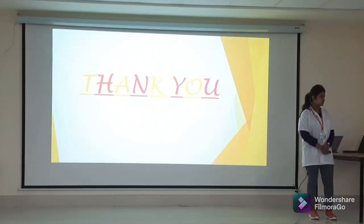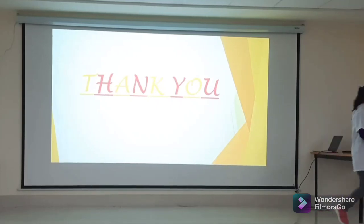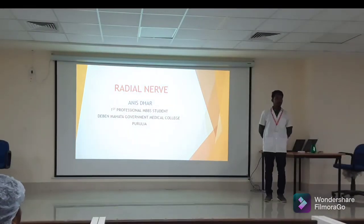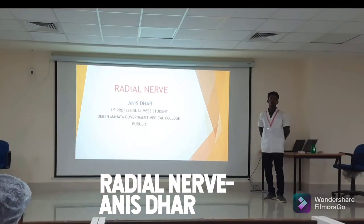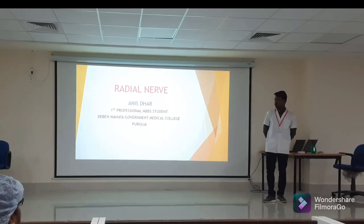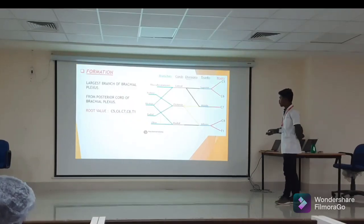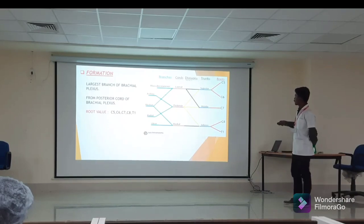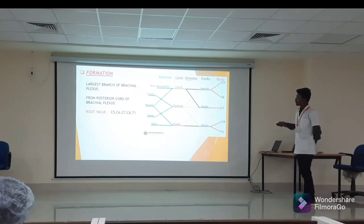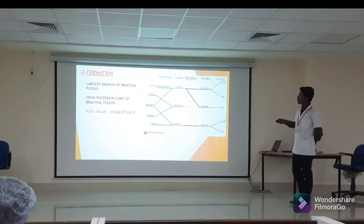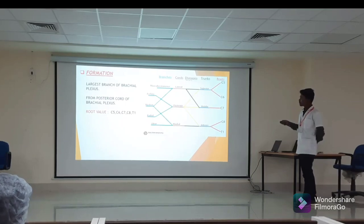I would like to invite the next presenter to discuss the radial nerve. The radial nerve forms from the posterior cord of the brachial plexus and has a root value of C5, C6, C7, C8, and T1. It is the largest branch of the brachial plexus.